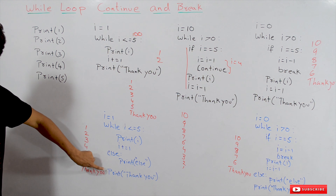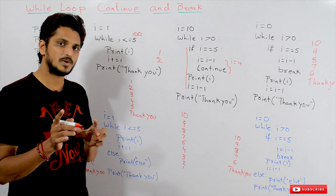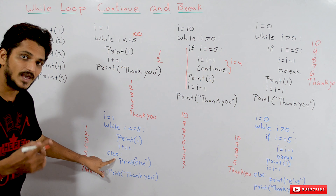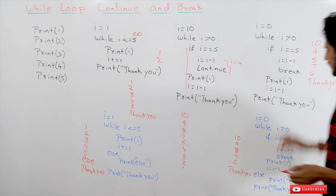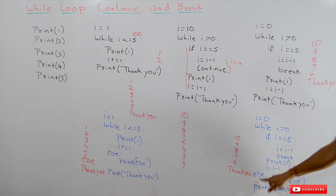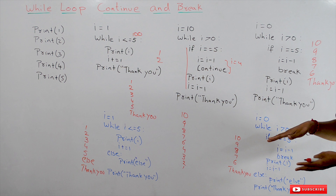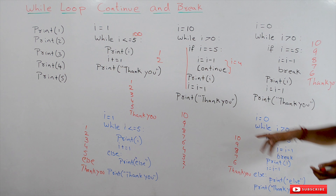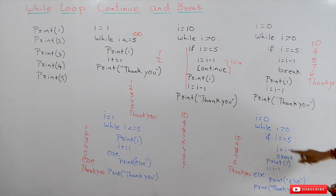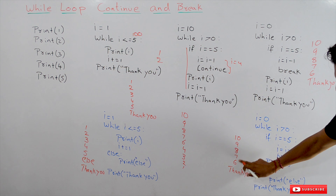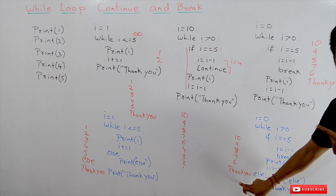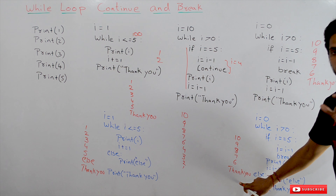The important point to remember: this else statement will not be executed if we break in the middle. If you write the else part for the break program, the loop is breaking in the middle — it is not executing until all condition checks complete, the condition has not naturally failed. In this situation the else part will not be executed. So the output is 10, 9, 8, 7, 6, and thank you — it won't go to the else part. Whenever the condition fails naturally, then only it will go into the else part. Remember that — it is very important to understand.